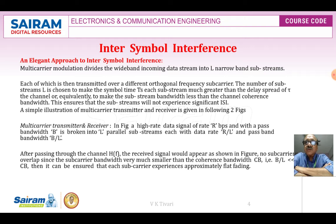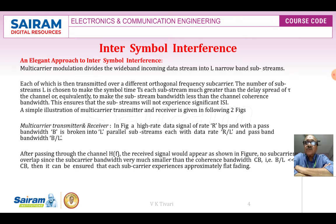Multi-carrier modulation divides the wideband incoming data stream into L narrow band sub-streams. The entire data stream with symbol time TS is divided into L narrow parts, each transmitted over different orthogonal carrier frequencies. The number of sub-streams L is chosen to make the symbol time of each sub-stream much greater than the delay spread of the channel, and equivalently to make the sub-stream bandwidth less than the channel coherence bandwidth CB. This ensures the sub-streams will not experience significant ISI and will be ISI-free. The illustration of this multicarrier transmitter-receiver is given in Figure 2.